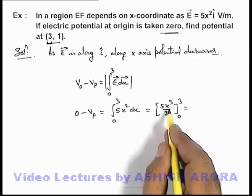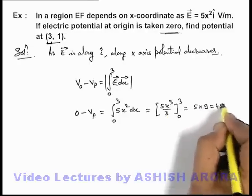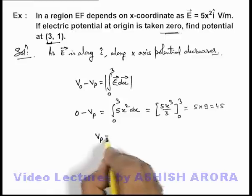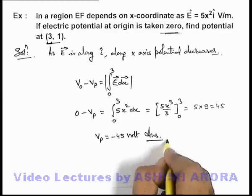And this will give us 5 into 9 that will be equal to 45, so potential at point P will be minus 45 volt. That will be the answer to this problem.